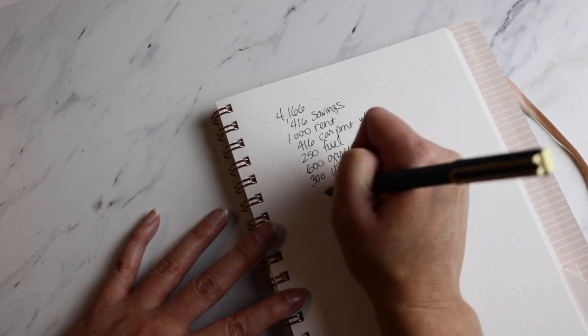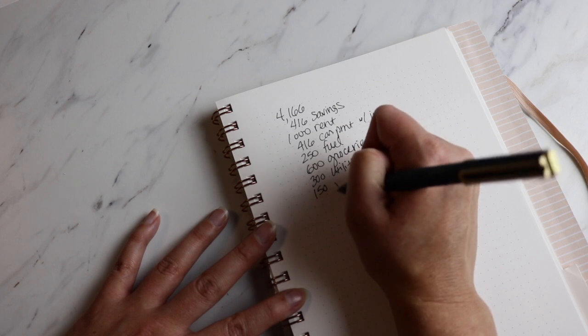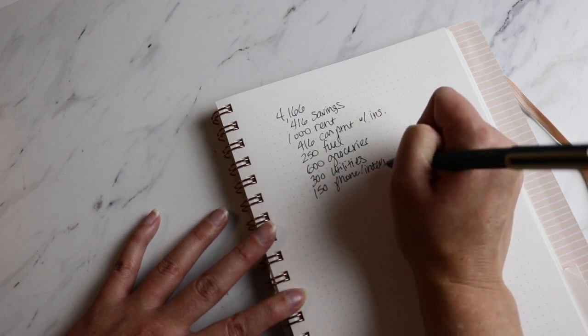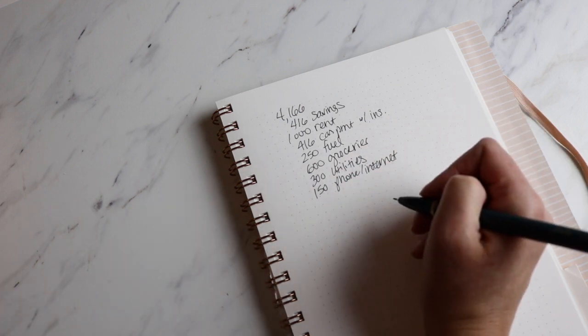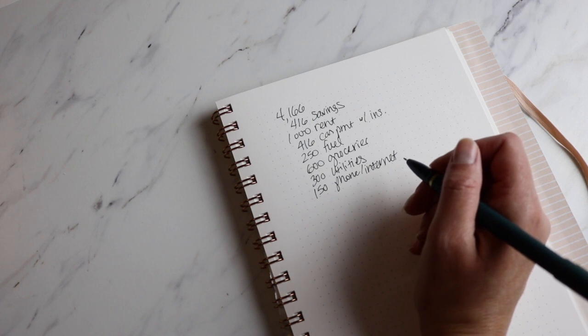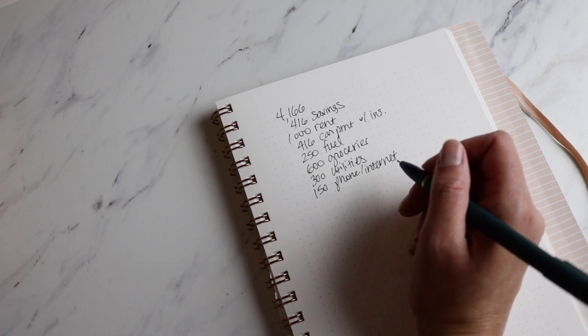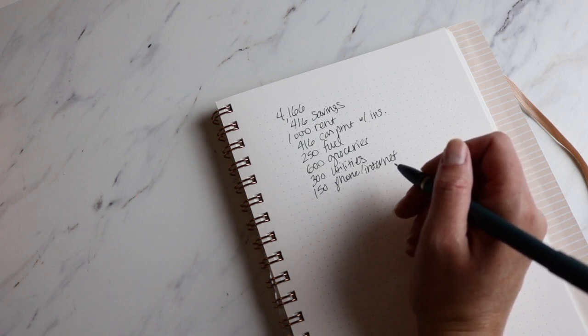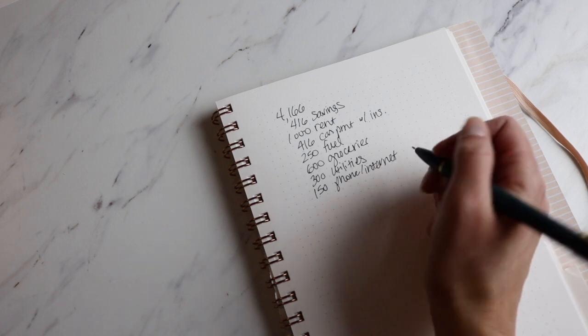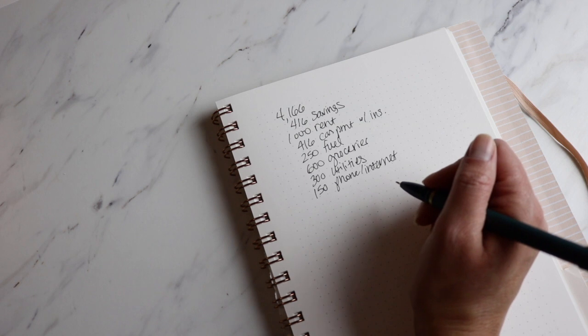Our utilities are going to be $300. Our phone and internet is $150. Your numbers may very well be different from these numbers. So don't think that if you make this amount of money and you're paying $200 to your phone and internet that you have to go do something crazy. Just look at your own financial situation and determine what is the best course of action for you.